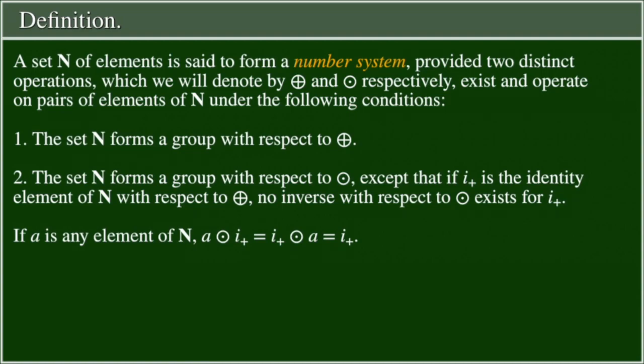Definition. A set N of elements is said to form a number system provided two distinct operations, which we will denote by addition and multiplication respectively, exist and operate on pairs of elements of N under the following conditions: 1.